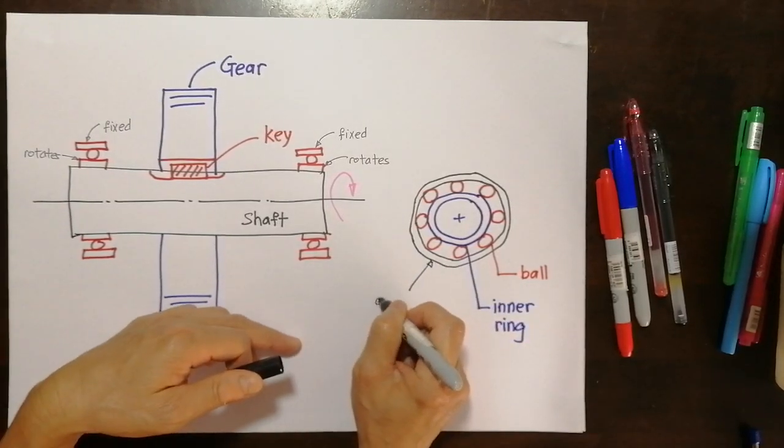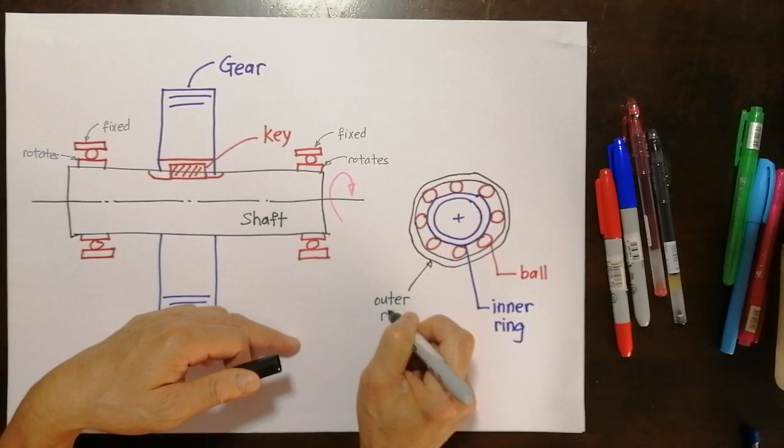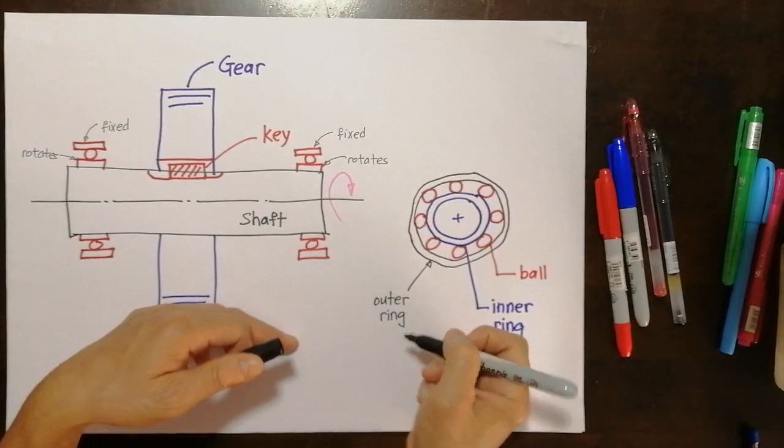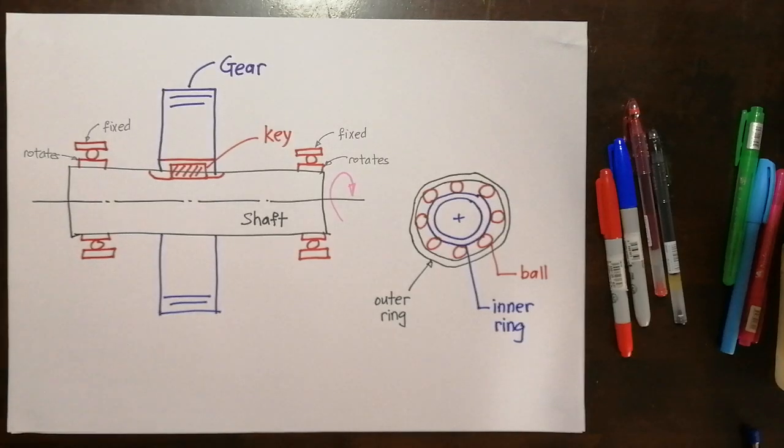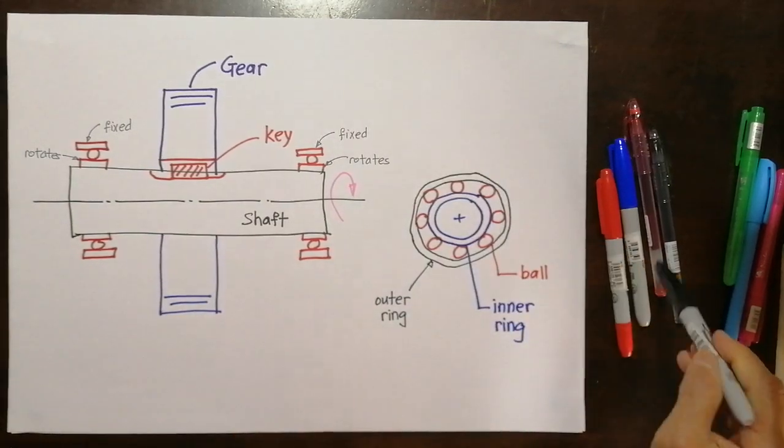If this inner ring, this obviously there's a outer ring. This is what we call the outer ring. There's one more part. You see, how are we going to prevent the balls to contact each other? How are we going to separate the balls?